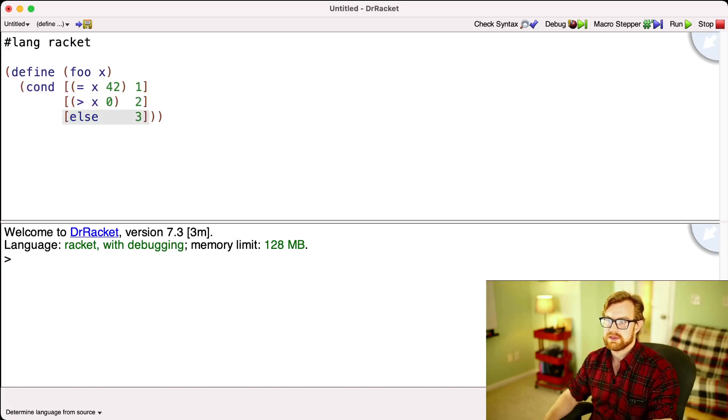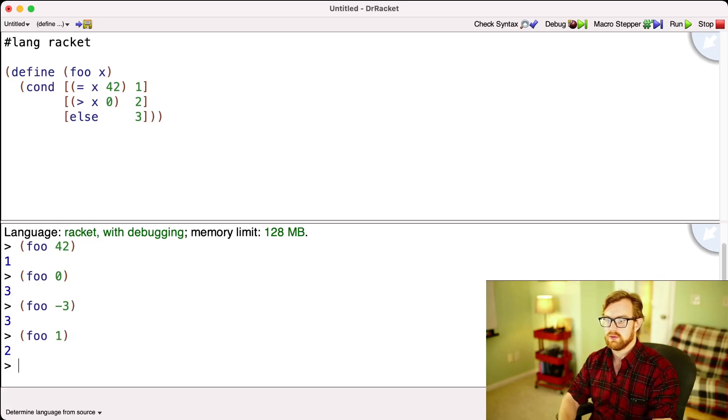So no matter what happens, this guard right here will get executed. Let's see what happens. So if I do foo of 42, the first one fires. What about foo of 0? The third one fires because the second one is not valid. 0 is not greater than 0.